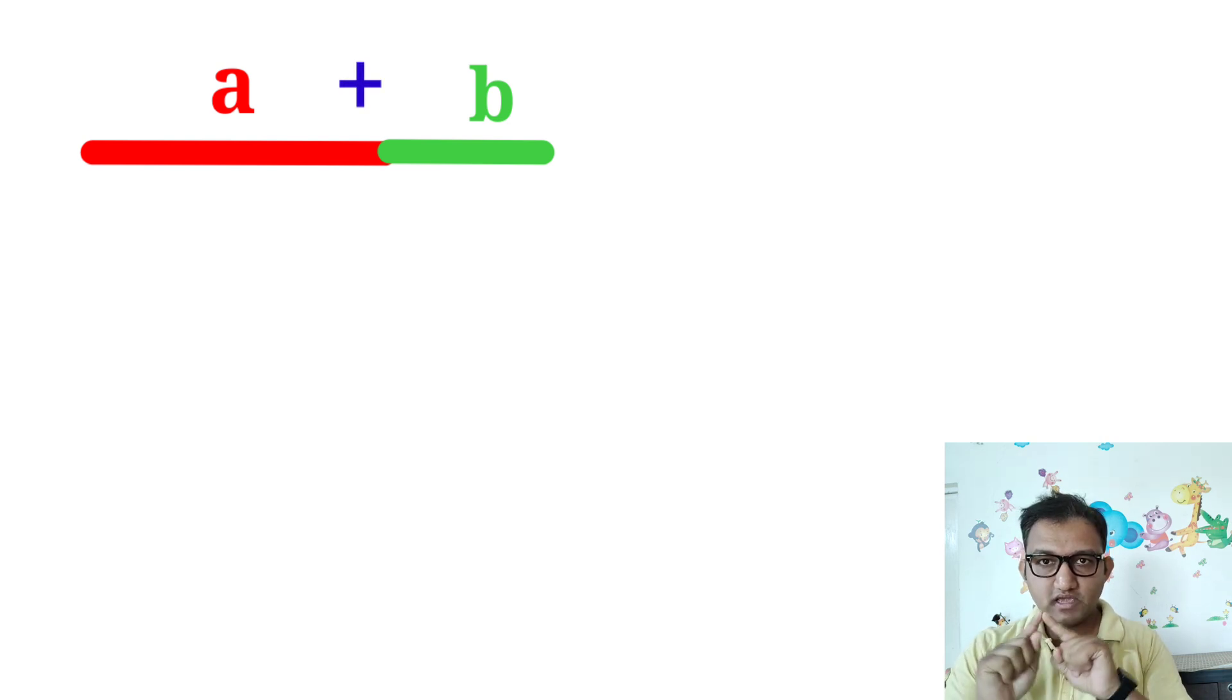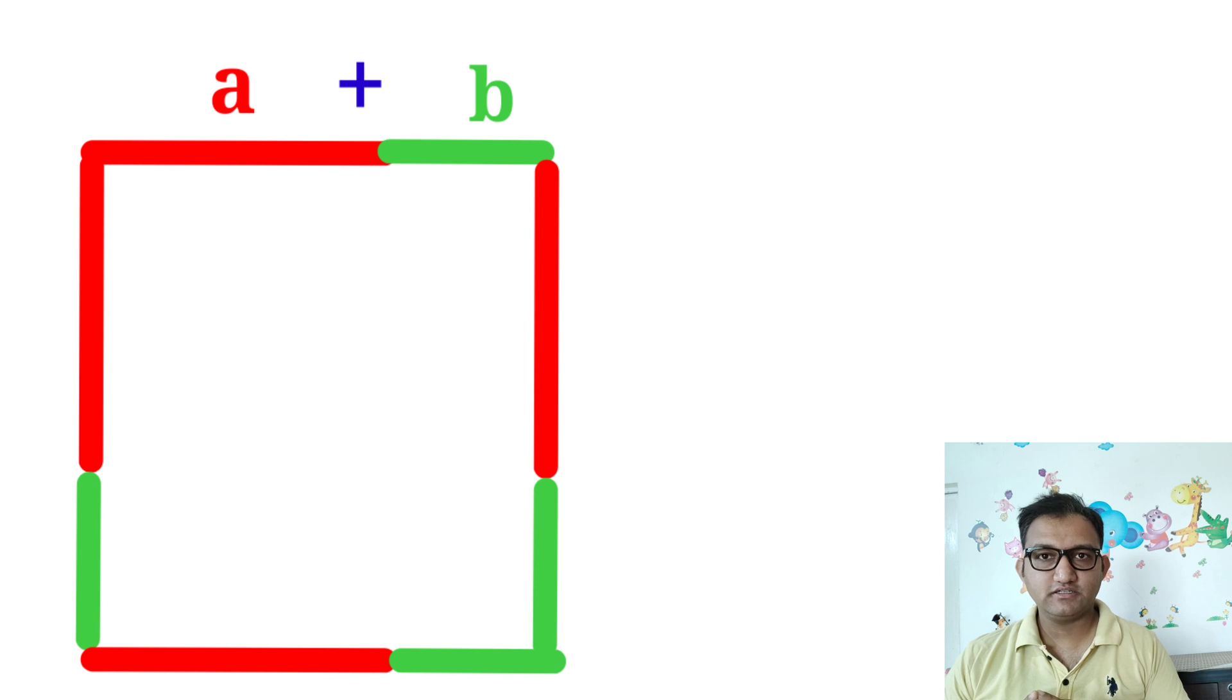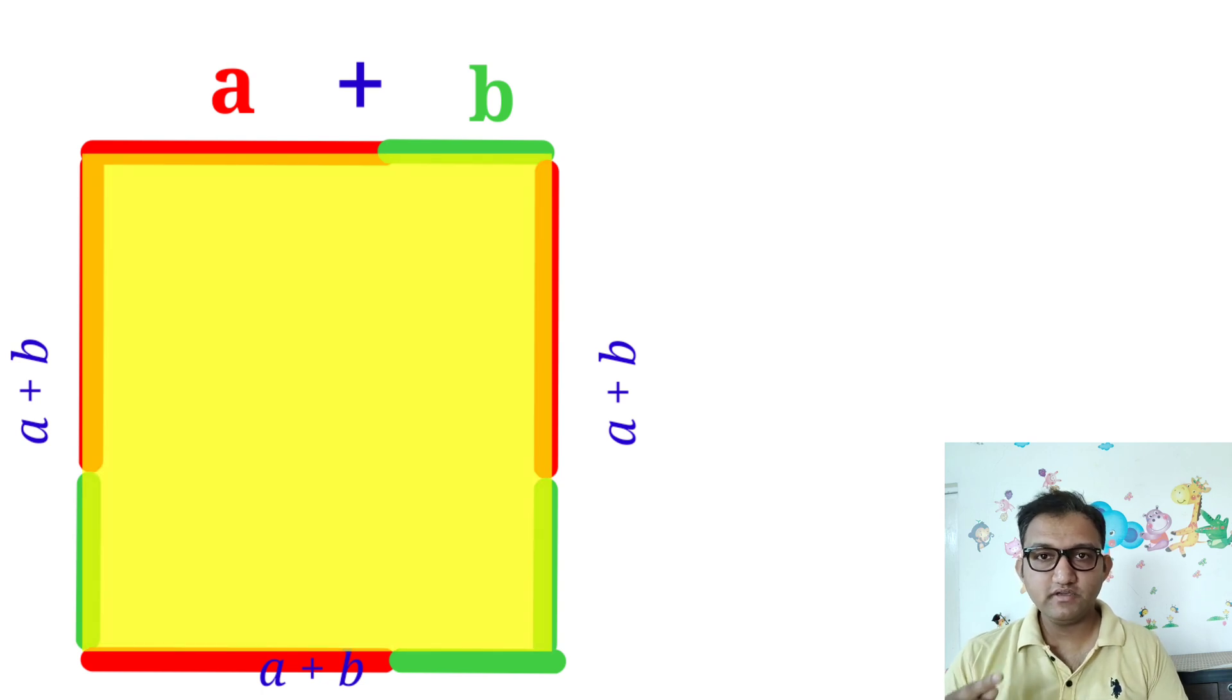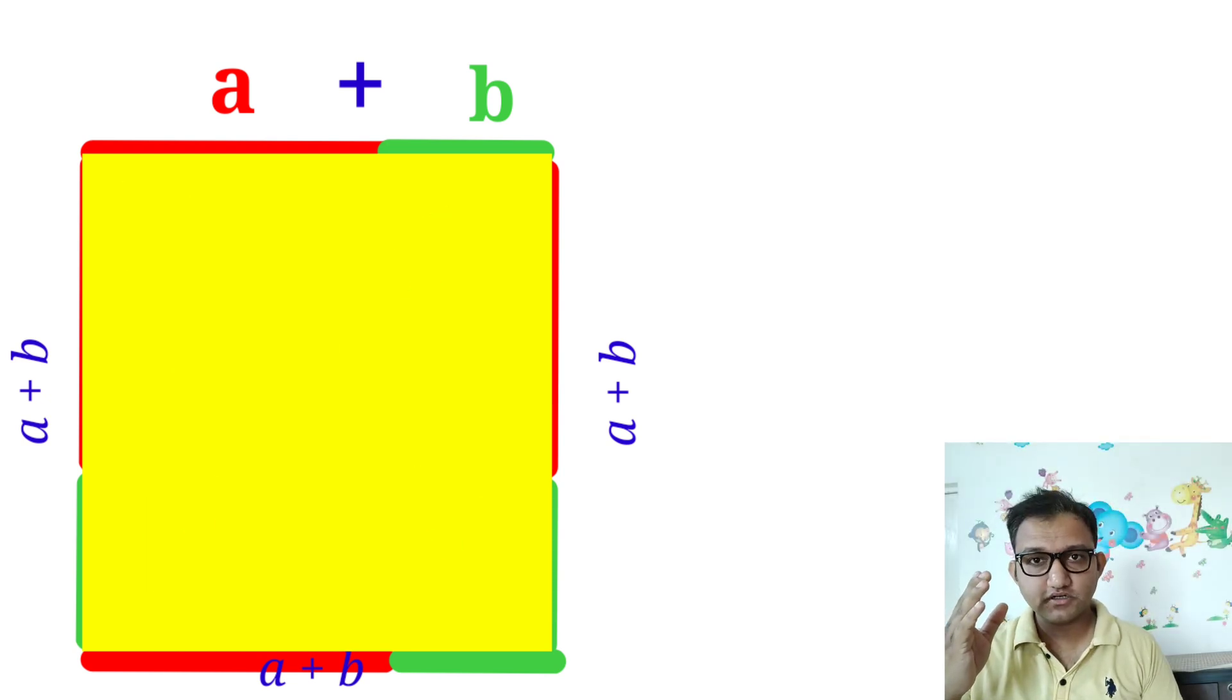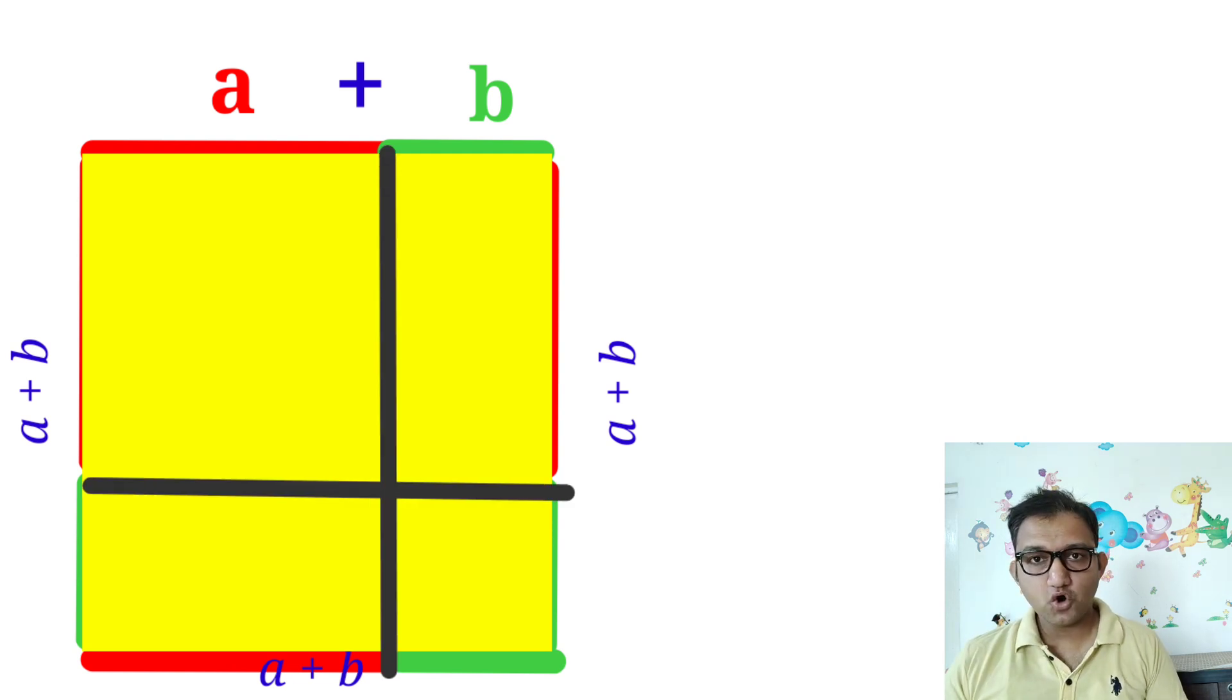Now we are going to make a square from these lines. It will be a four-sided figure, and we can write it as (a+b)². Now let's cut this square from b to b and a to a.